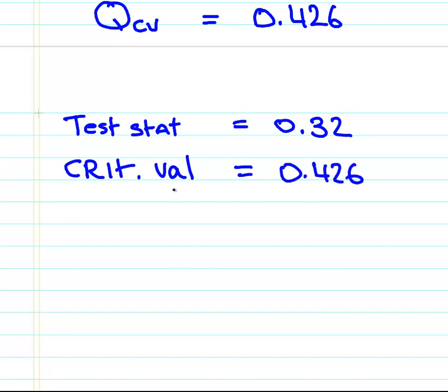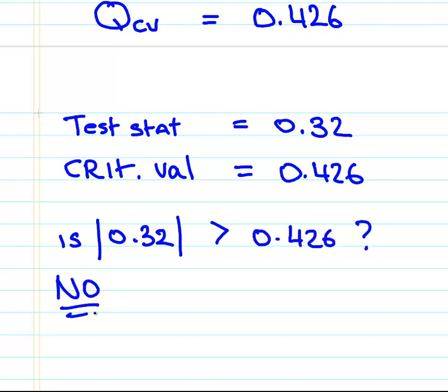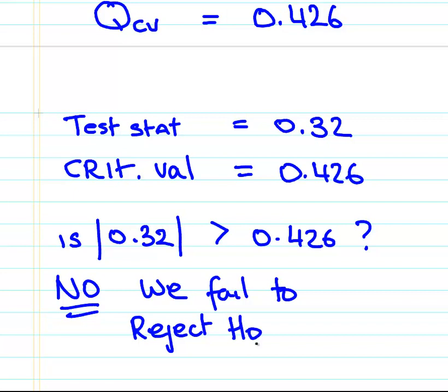Now, the absolute value thing is not important here. But essentially, what we're doing here is, is 0.32 greater than 0.426. The answer is no. So what do we do in that case? We fail to reject the null hypothesis. H0 being the null hypothesis. So that's it all together.